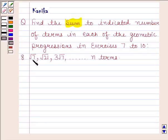find the sum to indicated number of terms in each of the geometric progressions in exercises 7 to 10. Given geometric progression is root 7, root 21, 3 root 7 so on up to n terms.